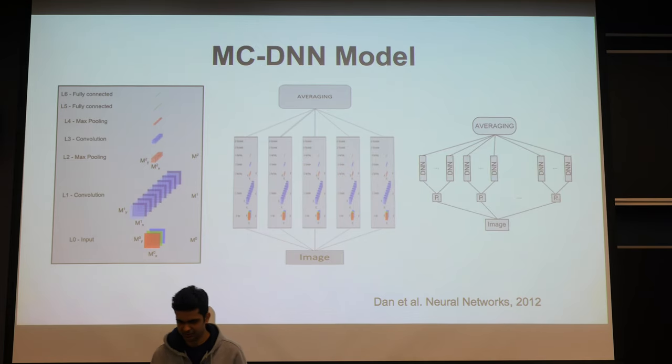They have trained the MCDNN structure, which is a structure that I described in the previous image, and trained this structure on different forms of the pre-processed data of the same dataset, and then averaged the results, which essentially gives even better performance.